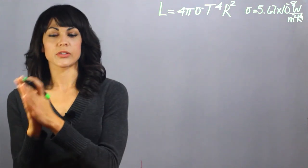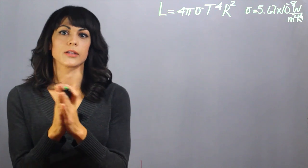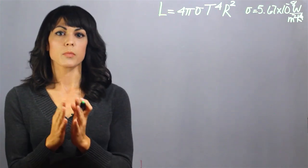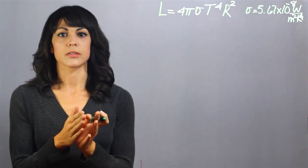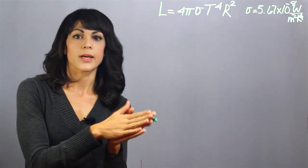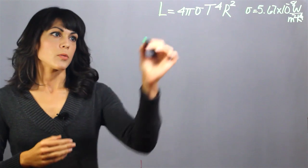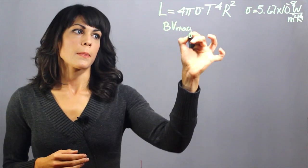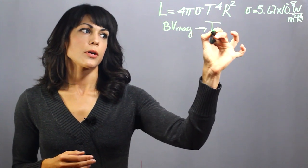So the bluer the star is, the hotter it is. The colder it is, the more red that it has. So we use magnitude filters that can tell us how much blue and how much red a star has. And generally we call that the BV magnitude, and that tells us directly the temperature of the star.